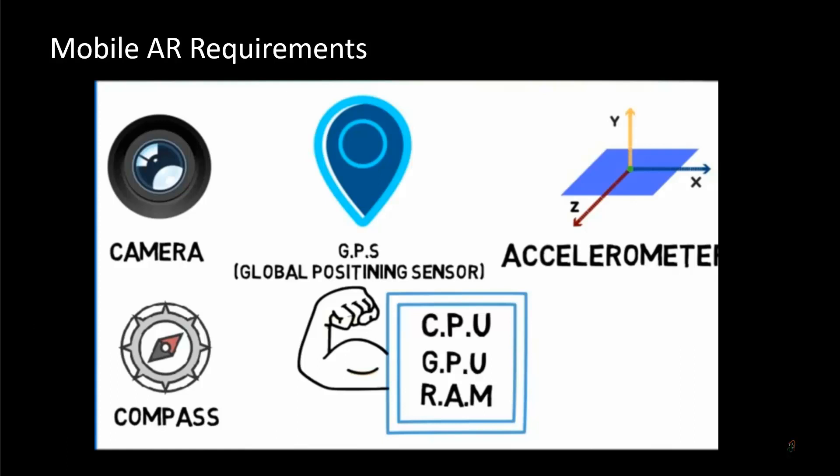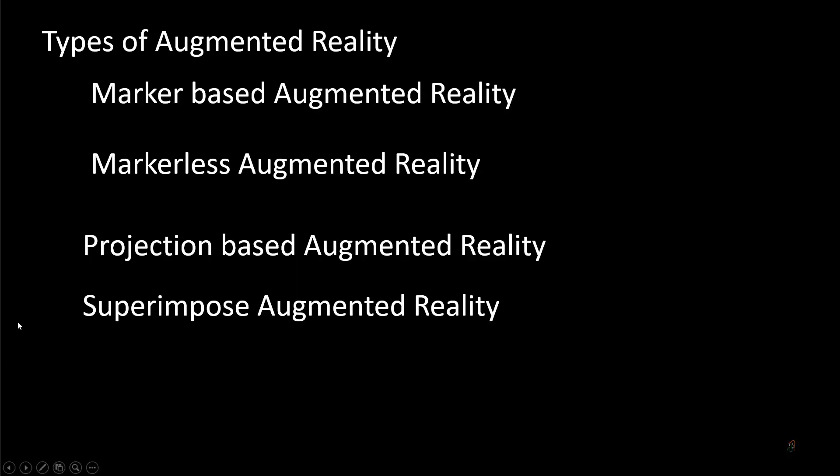For augmented reality on a mobile phone, the basic requirements are: a camera, GPS, and an accelerometer sensor, which judges the X, Y, and Z axis of the phone — determining whether it is held in landscape or portrait mode. We also need a magnetic compass to measure the magnetic field, plus a good CPU, GPU, and RAM.